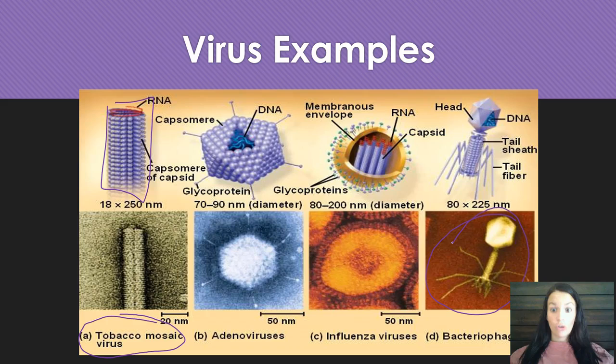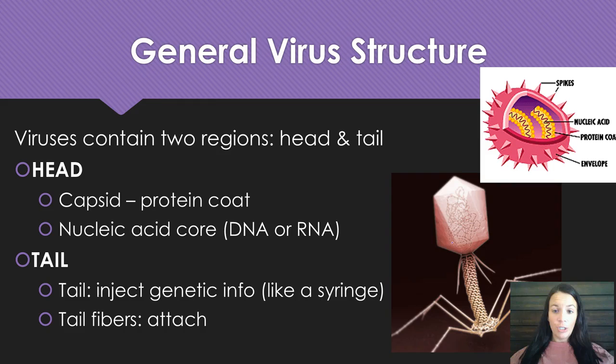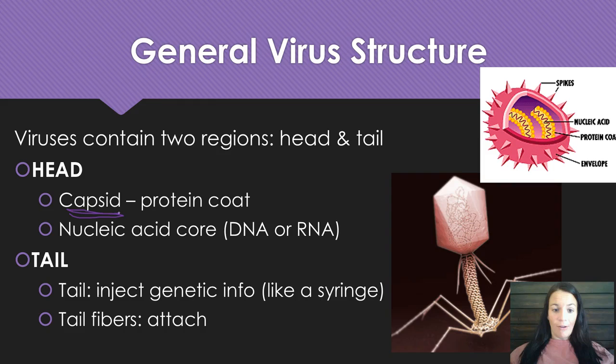General virus structure: viruses contain two regions — a head region and a tail region. The head has something called the capsid. Remember, the capsule is in bacteria, so capsid is in a virus. They also have a nucleic acid core that can either be DNA or RNA. The tail is where that genetic info is injected into the host, and the tail fibers help with attachment.